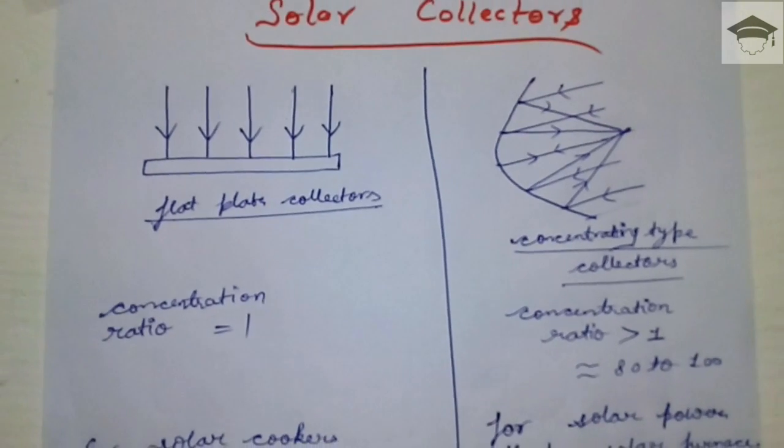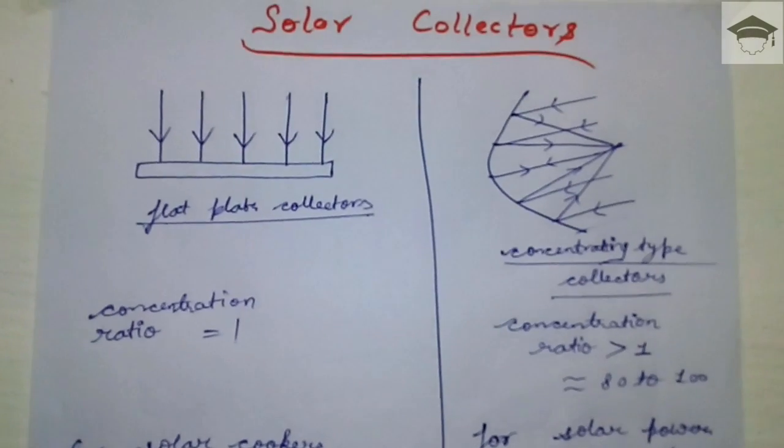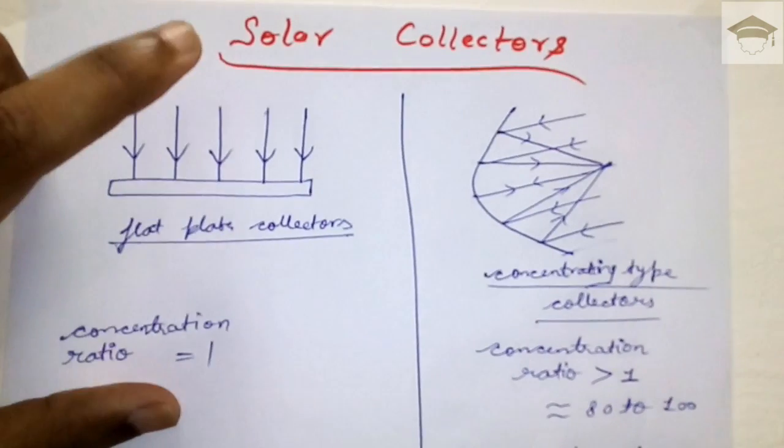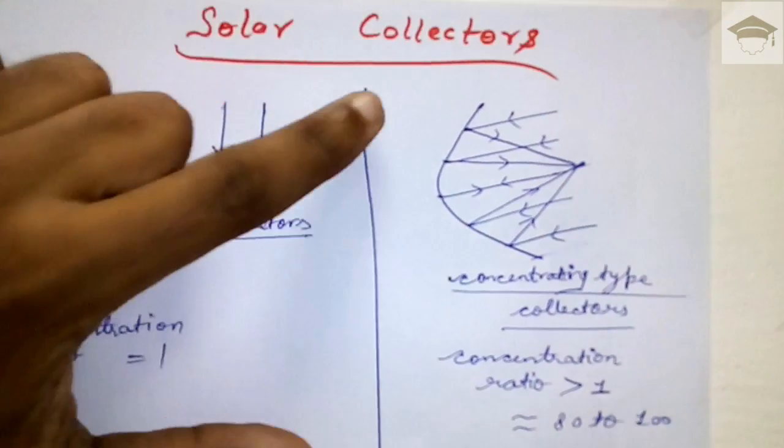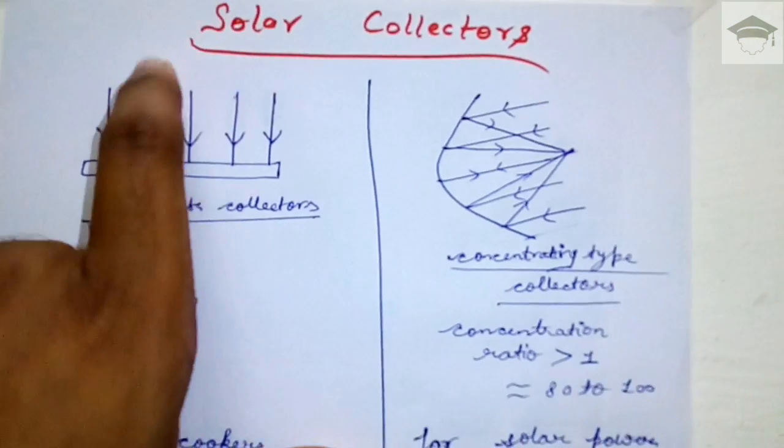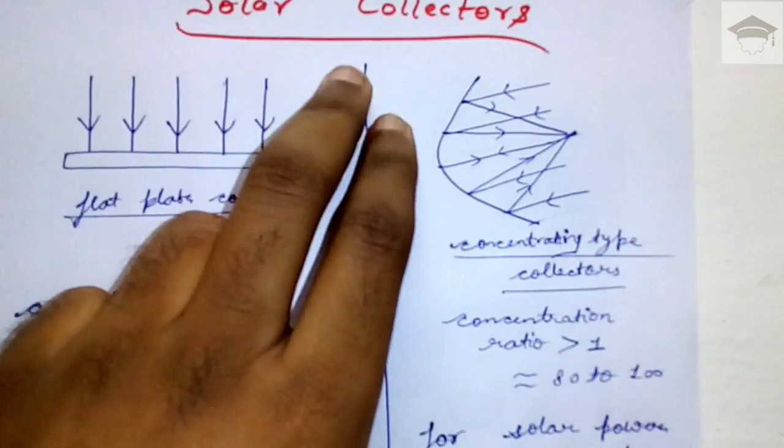Starting with the video: solar collectors, as the name implies, are devices which collect solar energy. Collectors are an important part in any solar system, whether it's a solar energy producing system or solar refrigeration system.